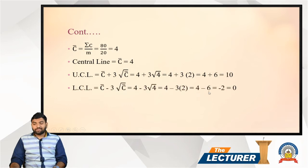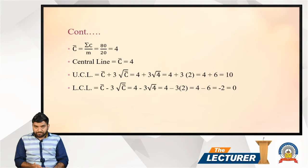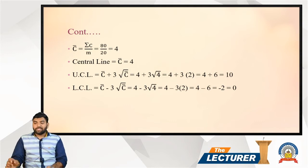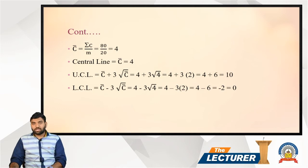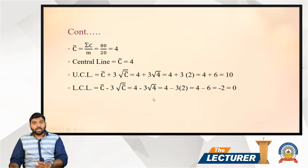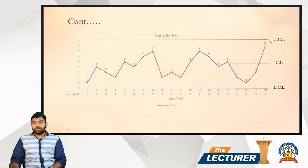The LCL, or lower control limit, is C-bar minus 3 times the square root of C-bar: 4 minus 6 equals minus 2. Since LCL is negative, we take it as 0. The LCL is therefore 0 — negative values are not meaningful for control charts.